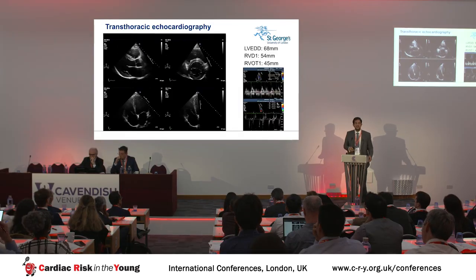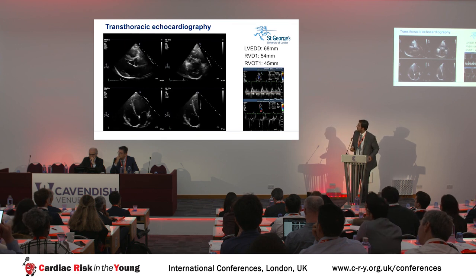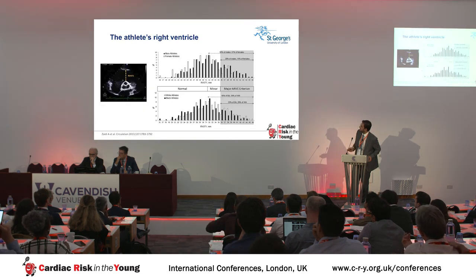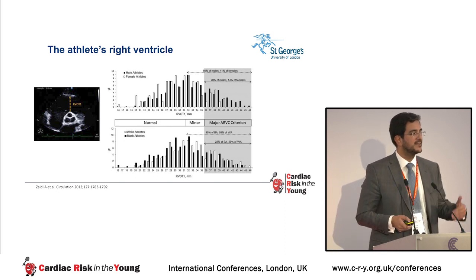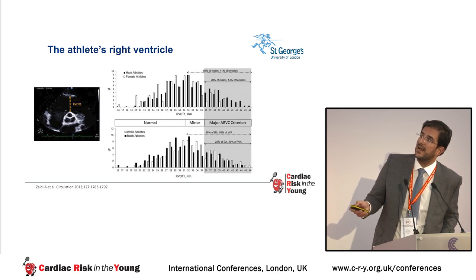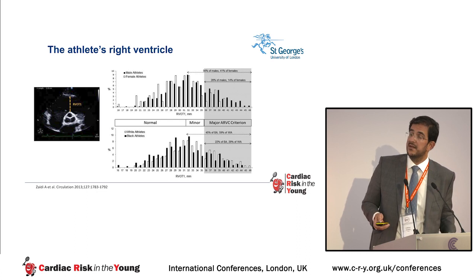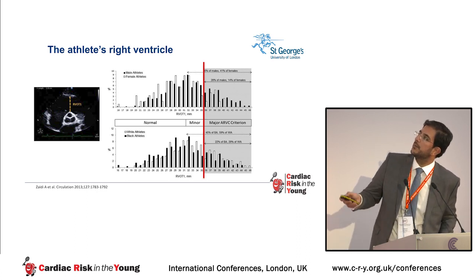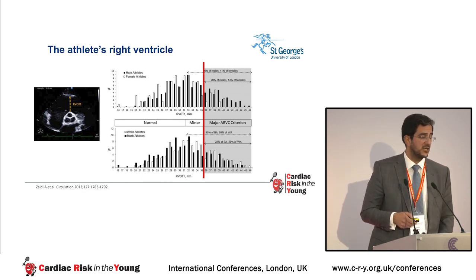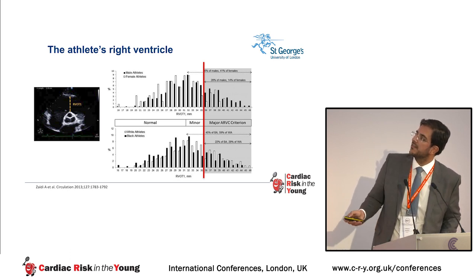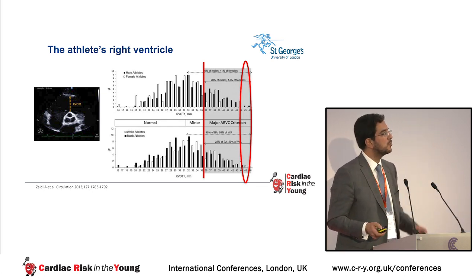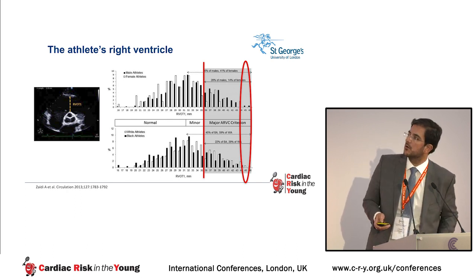Diastolic and systolic function is within normal limits. If you take that 45 mm value and look at the study that Abbas Zaidi published, looking at RV dimensions in athletic individuals — male versus female on top, white versus black at the bottom — a significant proportion overlap with the dimension criteria of arrhythmogenic right ventricular cardiomyopathy. Our athlete will fall around that 45 mm, at the fringes of what's considered normal within that large cohort.